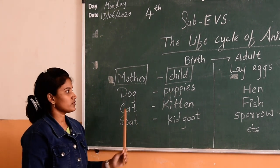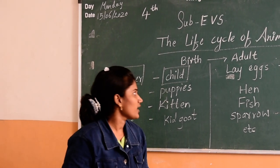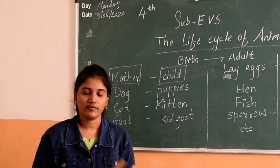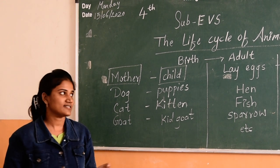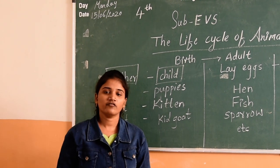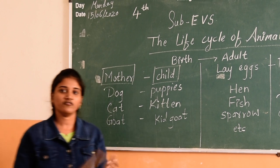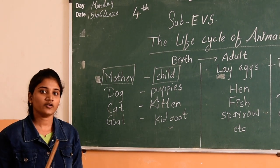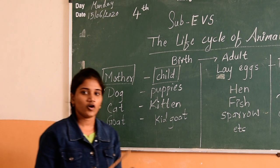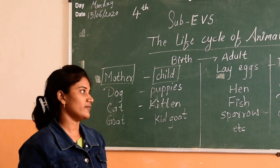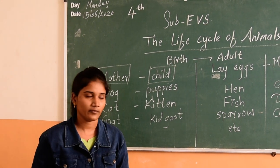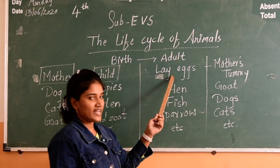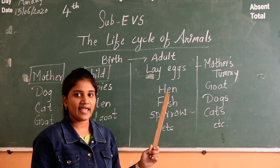From this we can understand that there are two types: some animals lay eggs, and some are directly born from their mother's tummy. So we are going to differentiate the animals which are born from eggs and those born from the tummy. We will see first which animals lay eggs.